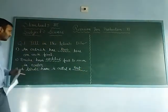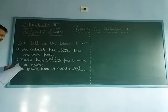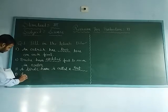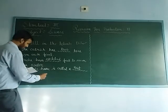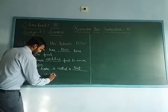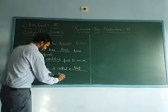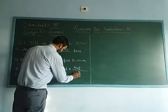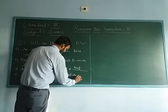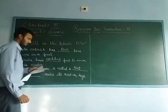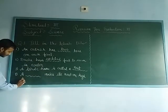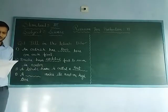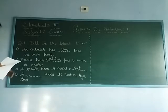Third number: a bird's home is called a nest. Some birds make their nests on trees. A vulture makes its nest on high trees. The answer is nest.